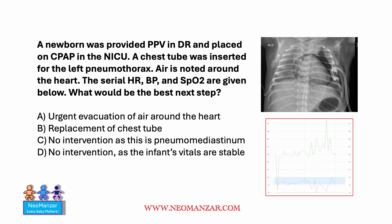The chest tube was inserted for the left pneumothorax as shown in the picture. Air is noted around the heart. Serial heart rate, blood pressure, and saturations are given below on this side. So what would be the next best step?